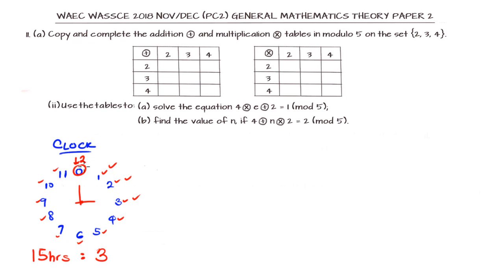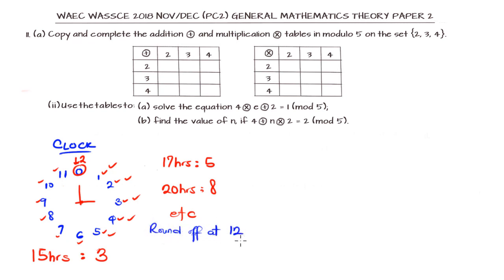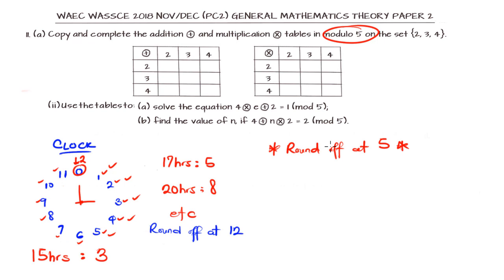What we notice is that at 12 we round off our counting and start again. In the same way we can tag 17 hours as 5, and 20 hours as 8. This is obtainable because we are rounding off at 12. So 12 is our benchmark, and any number after 12 we round up to start all over again. This is the concept of modulo we are going to work with — but here, instead of modulo 12, we are going to work in modulo 5.